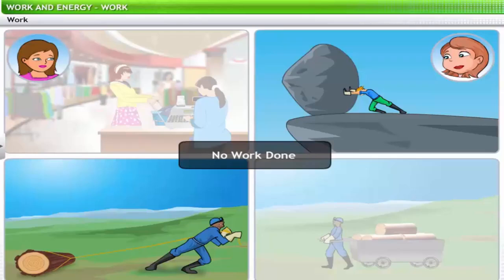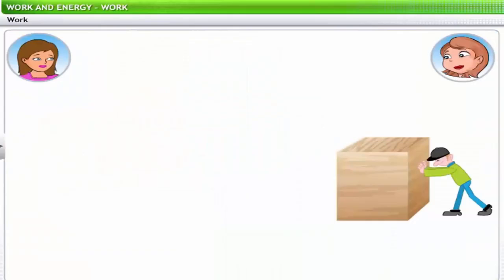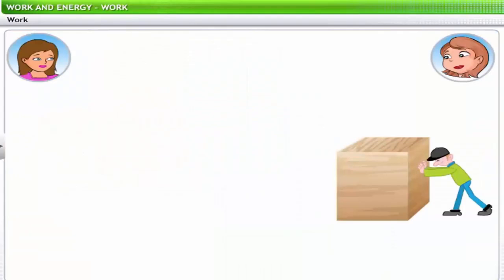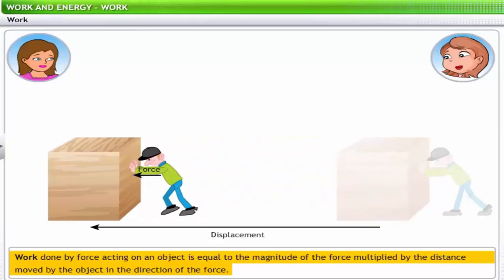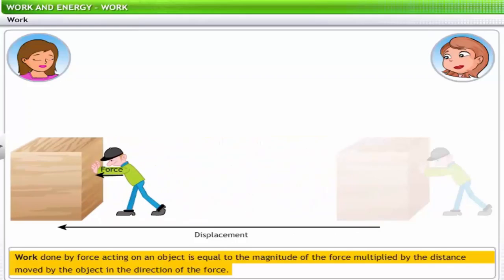Oh, I see — that's why you said I haven't done any work; I haven't actually been involved in moving any objects. That's right. Work done by a force acting on an object is equal to the magnitude of the force multiplied by the distance moved by the object in the direction of the force — that is, the displacement of the object.